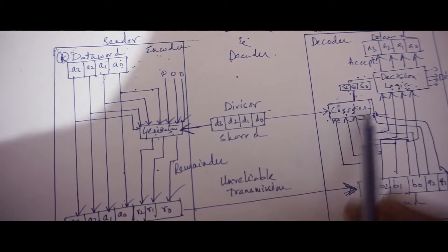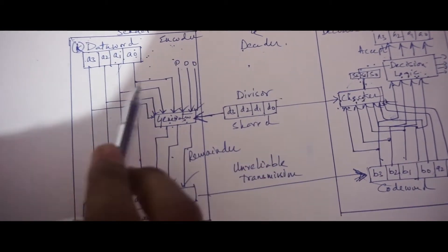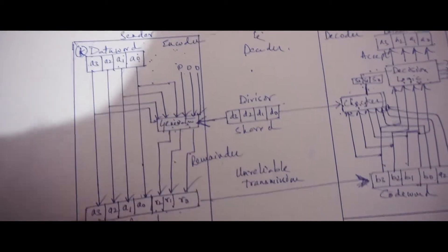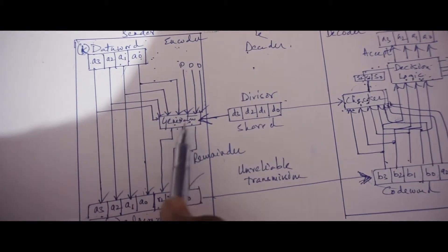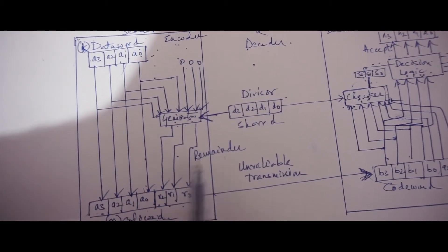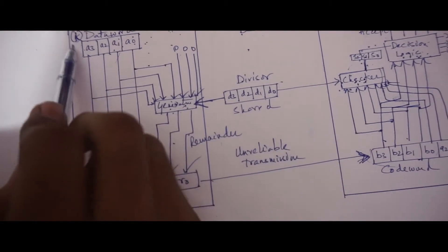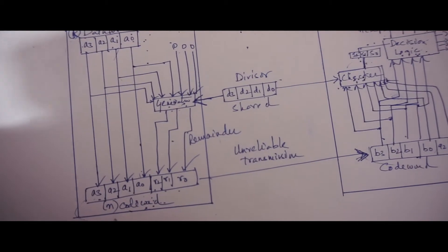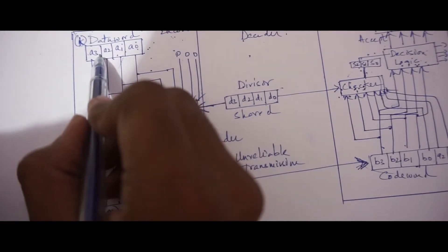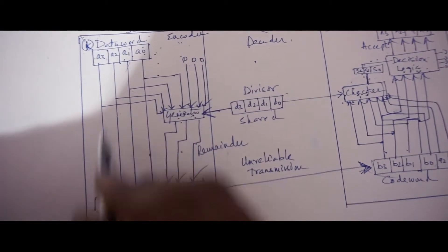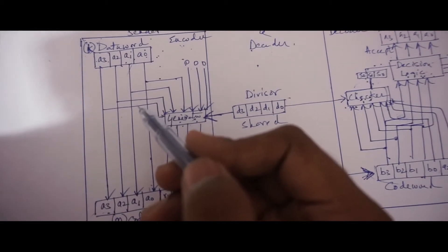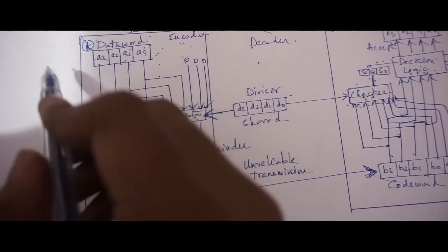And this is the possible design for CRC encoder and decoder. On the encoder side, we have the following parameters for performing the division. The parameters are: data word, generator, code word, and reminder. So in the encoder, the data word has k bits, the code word has n bits. The size of the data word is augmented by adding n minus k zeros to the right-hand side of the data word.